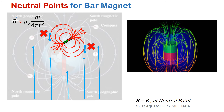In books, neutral points are generally discussed at the equatorial position and the axial position of the magnet, but there could be other positions as well where neutral points are created because the magnetic field of the magnet becomes equal to the earth's magnetic field.